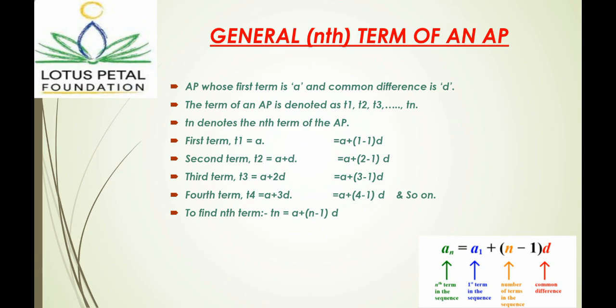On your right side, An is equal to a plus bracket n minus 1 bracket d, which represents An is equal to nth term in the sequence. a represents first term in the sequence, n represents number of terms in the sequence, and d is common difference.